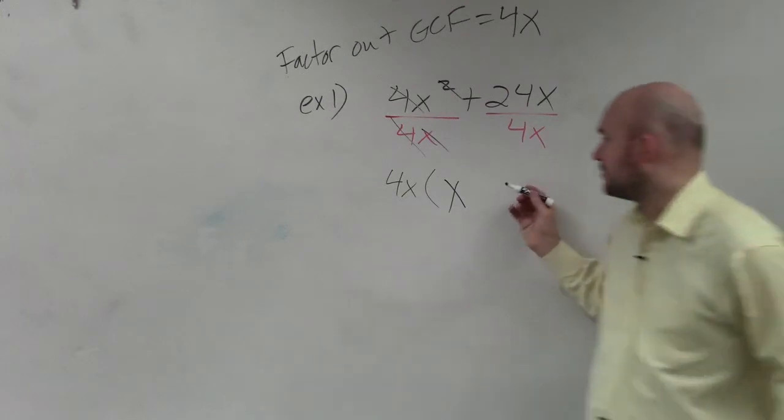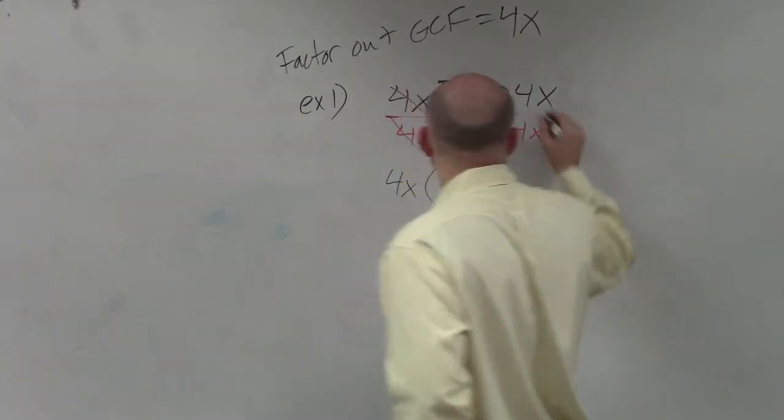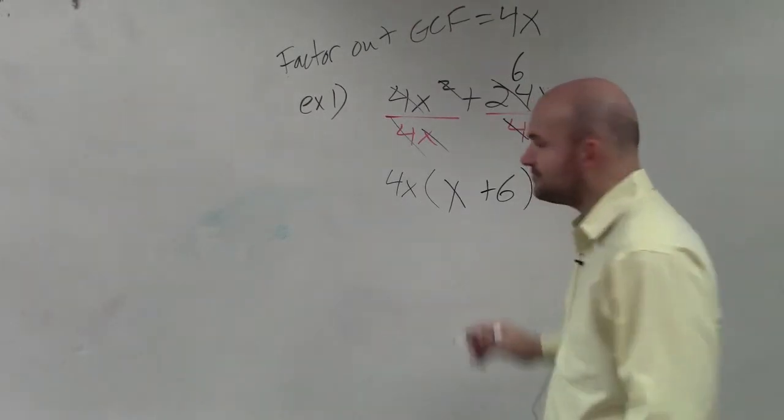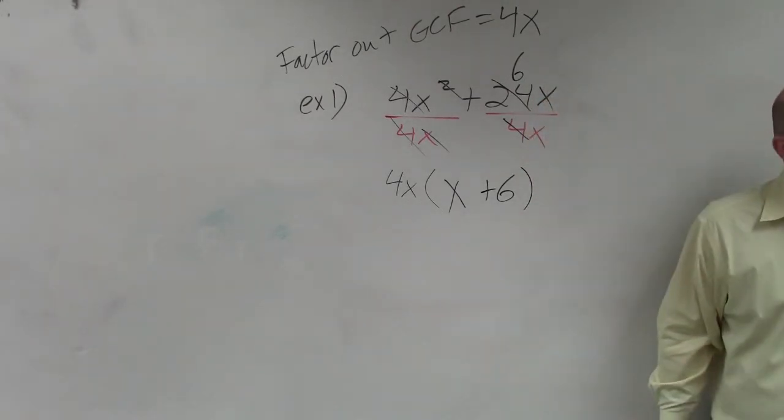24 divided by 4 is a positive 6. And then x divided by x goes to 1. So I'm left with 4x times x plus 6.